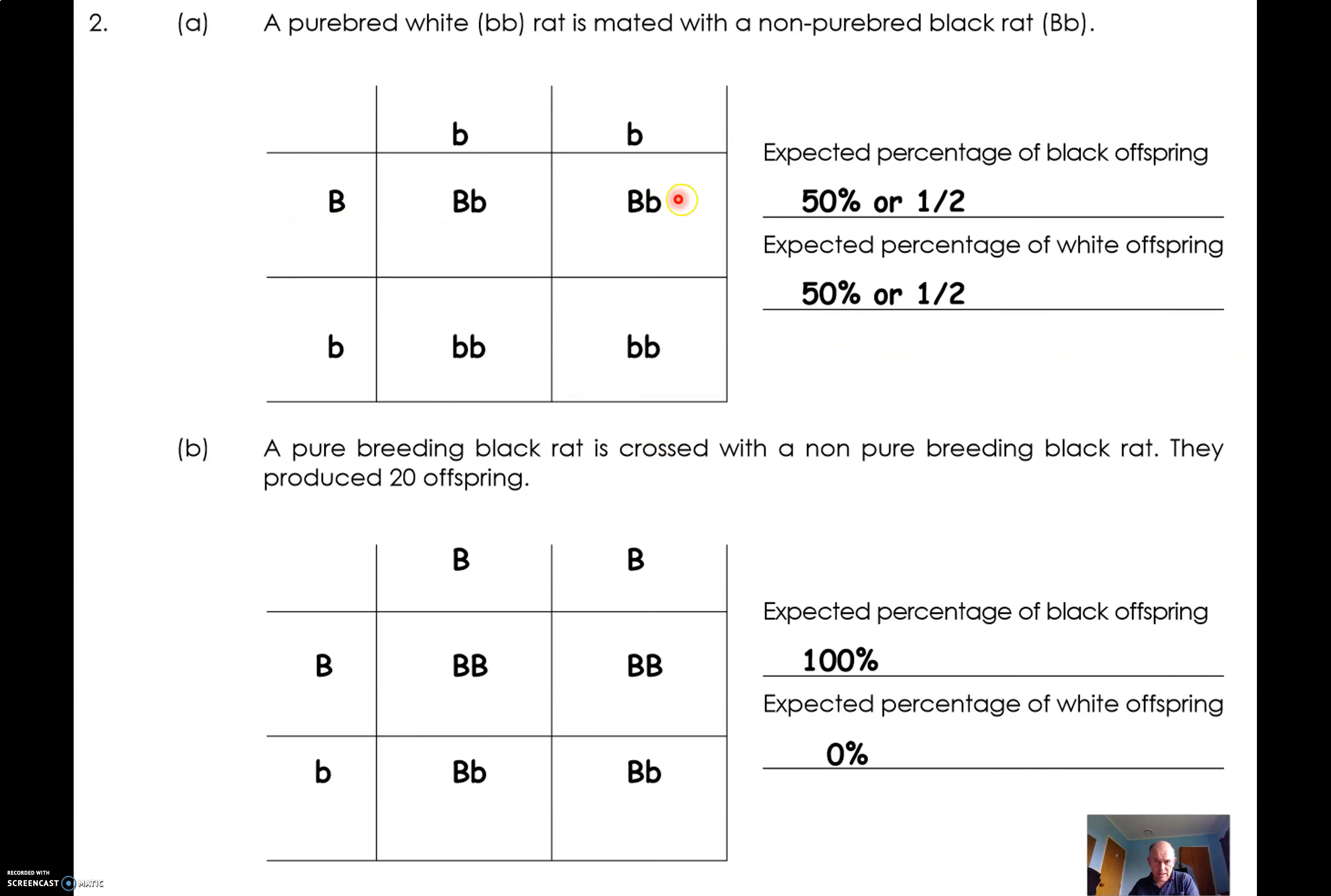So you're going to have two chances out of four of a heterozygous or a black rat, Bb, and two chances out of four, 50%, of a white rat, bb. Cool.